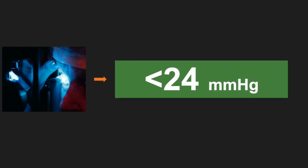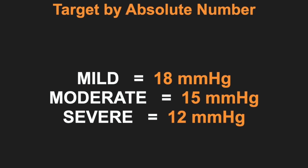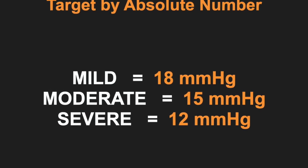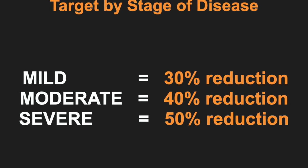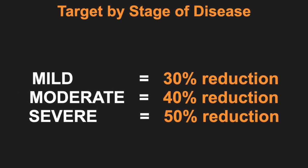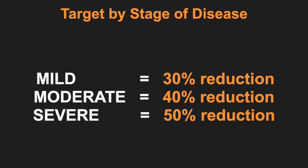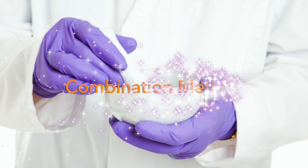Another method is to set an absolute number for every patient with similar glaucomatous damage as a target and then adjust it depending on the progression of the disease. A third way is to set target eye pressures based on the stage of the glaucoma — the more advanced the glaucoma, the lower the target should be. Typically a 30% reduction for mild glaucoma, 40% for moderate, and 50% for severe glaucoma.